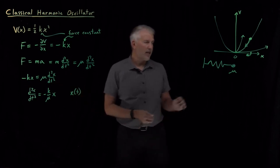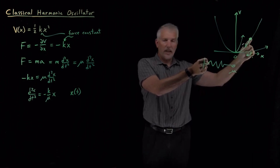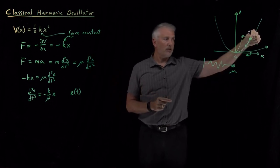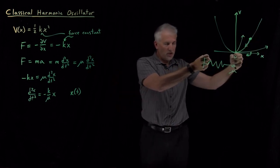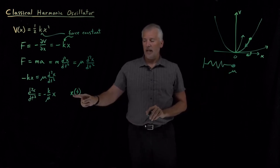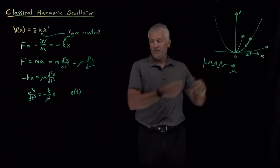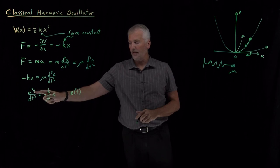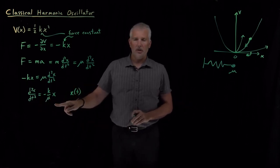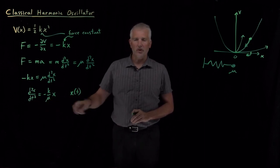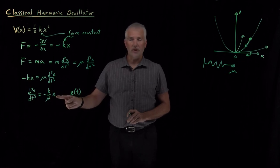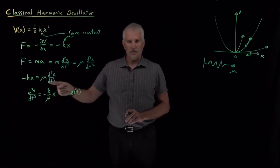This x is a function of time. When I stretch the spring to some initial value of x and let it go, the force will cause its position to change — it will go back, compress, stretch, compress, stretch, oscillating back and forth. That oscillation changes the value of x as a function of time. The second derivative of that function with respect to time must equal the original function multiplied by some negative constant. That differential equation should look familiar — it's exactly the same one we solved for the one-dimensional particle in a box.